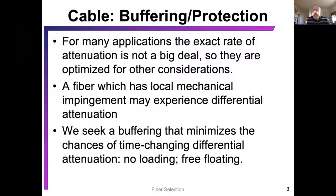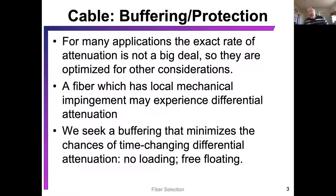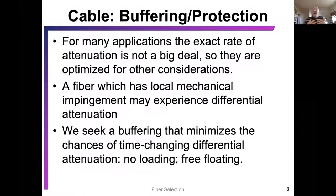Cable protection is super important. Anything that impinges on the cable can create a micro bend or a macro bend. Micro bends basically overcome the index of refraction break so that light can escape. When you have a micro impingement, that leads to attenuation — and not only attenuation, but the blue-shifted light escapes more aggressively than the red-shifted light, changing your ratio. Unless corrected for, all of your temperatures will be erroneous from that point forward. Take that seriously.